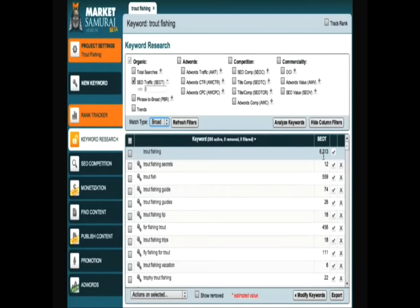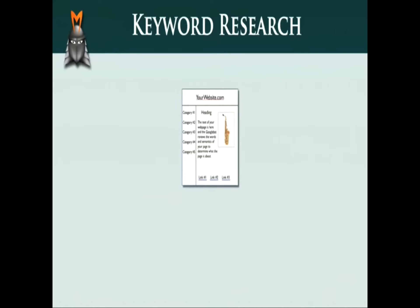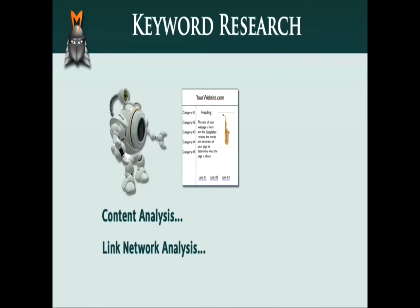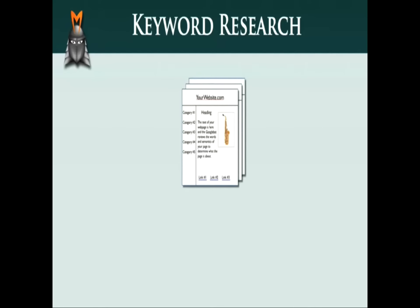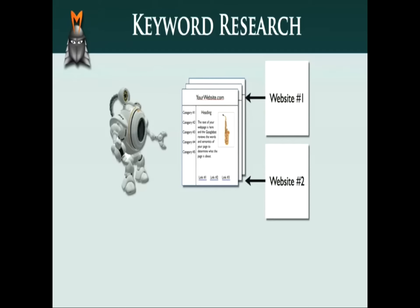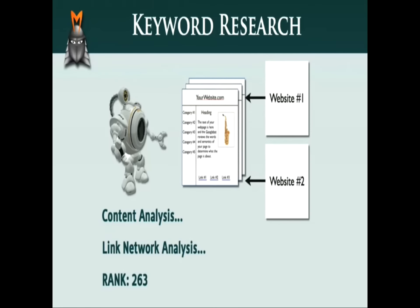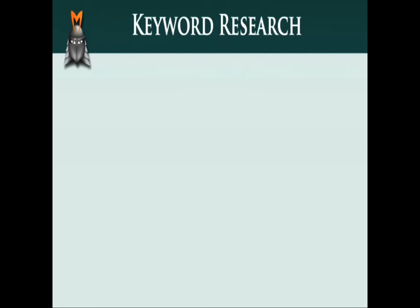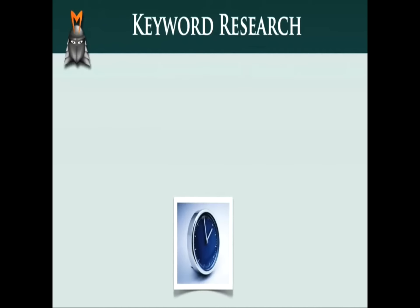Now you may be wondering why Market Samurai uses the broad match value as a default. In order to understand this, we need to take a quick look at how Google rankings develop over time. When you first create a website and let Google know about it, Google sends out an automated robot called a Googlebot or Spider to examine your website. The Googlebot examines the content on your page and the number and type of links that point to your site, and then ranks your site for particular keyword phrases that it sees as relevant. As you continue to add good quality content and obtain links, the Googlebot will repeat its analysis and give you a new rank for particular keyword phrases. The important thing to understand is that you achieve different rankings over time as your site grows and develops more authority.